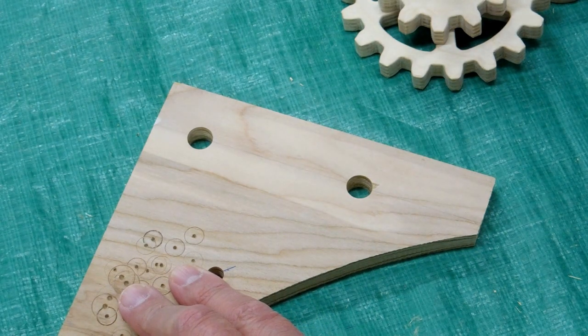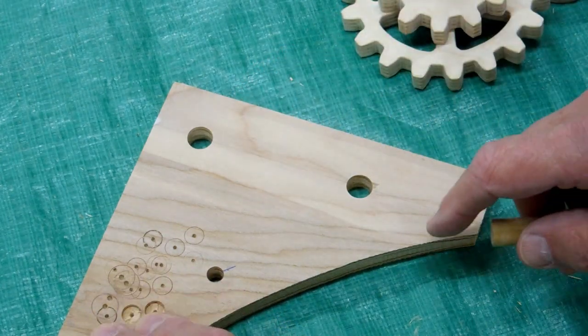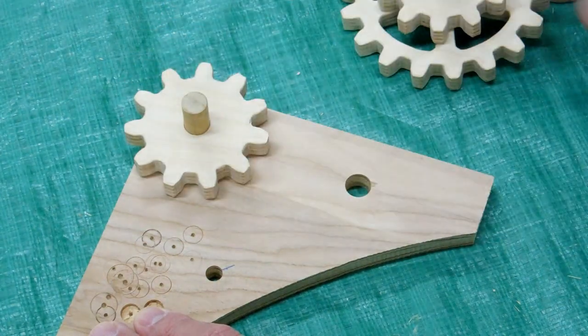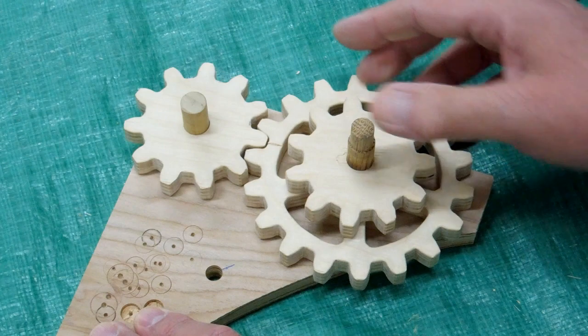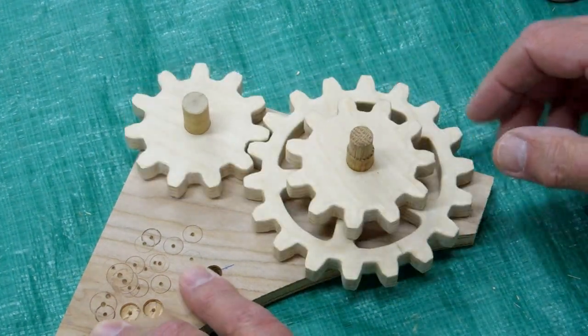I want to test our wood gears to make sure they turn freely. Let's take a piece of scrap, drill some holes at the correct axle spacing, put a couple of pegs in there, and give them a spin. That looks pretty good.